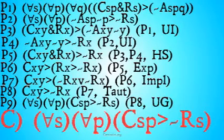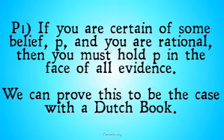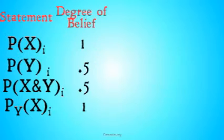Now that we've demonstrated the argument to be valid, let's look at some reasons you might think it's sound. For the first premise, we offered a more intuitive explanation in the previous video, so check that out if you're interested. We can also prove it to be the case with a Dutch book. Imagine someone named Bjorn has the following degrees of belief.